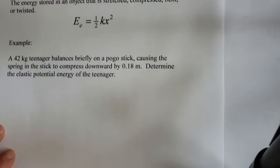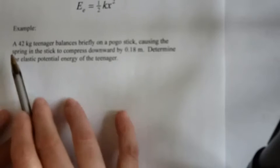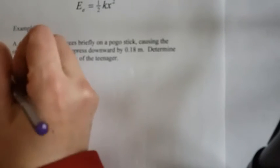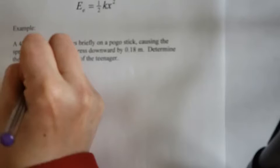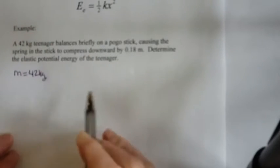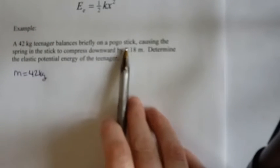So let's try an example. So it says a 42 kilogram teenager, so I know my mass is 42 kilograms, balances briefly on the pogo stick, causing the spring in the stick to compress downward by 0.18 meters. So that's my X, my compression. Determine the elastic potential energy of the teenager. So I'm looking for EE.